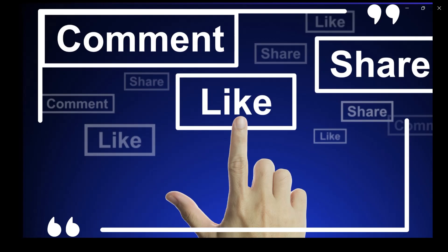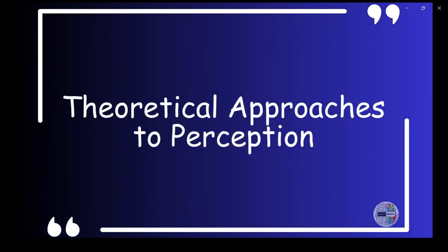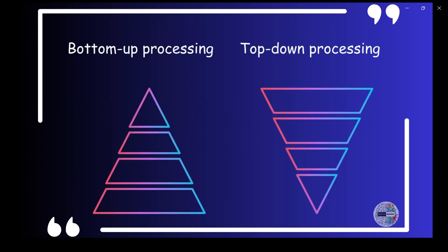Next, we have theoretical approaches to perception. Very simple if you understand, so pay attention. The process of perception has been explained using two approaches: Bottom-up processing and top-down processing. Let's break down the concepts of top-down and bottom-up in simple terms.